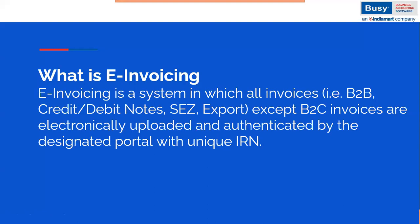Before looking at the configuration module, let's have a clear idea about e-invoicing. E-invoicing is basically an electronic system process in which all invoices — including B2B, credit note, debit note, SEZ, and export transactions — are automated to the IRN portal and generate a unique Invoice Registration Number, called an IRN number. Every e-invoicing transaction gets a new IRN number.